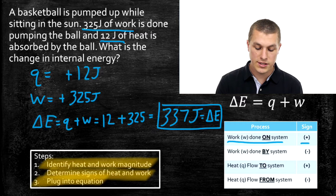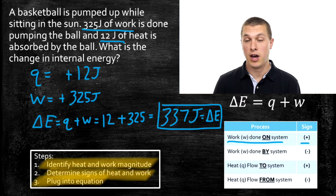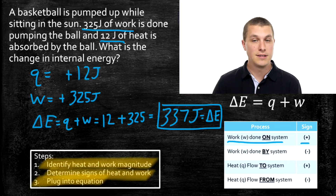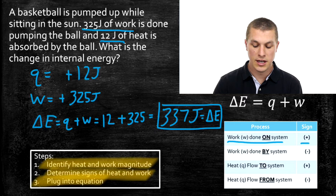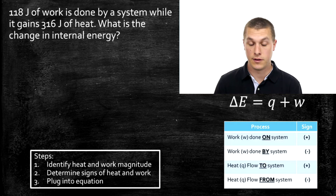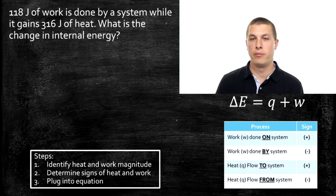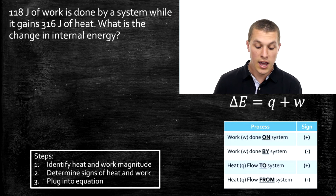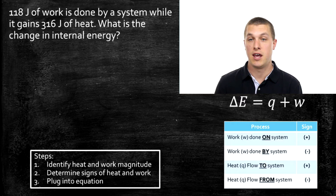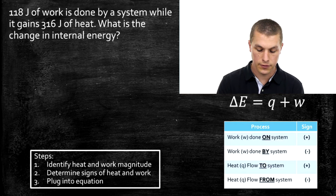The basketball problem gave concrete clues about what was happening. But lots of times, the way textbooks word problems is more like this: '118 joules of work is done by a system while it gains 316 joules of heat. What is the change in internal energy?' There we don't have clues like a ball or the sun — we just have to go based on the words in the problem to understand whether our heat and work are positive or negative.